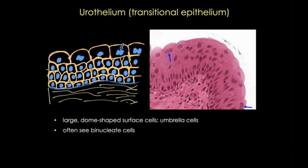Another key feature is that these cells are often binucleate — compare that to the most apical layer in stratified squamous epithelium, which lacks nuclei. Urothelial cells are usually cuboidal or even columnar, and because of these shapes they are sometimes mistaken for a pseudostratified tissue, but it's important to note that only the bottom layer of cells touches the basement membrane. In contrast, stratified squamous epithelia never contain columnar cells.